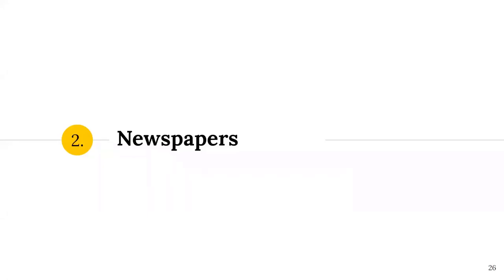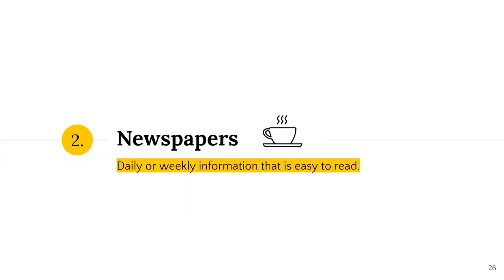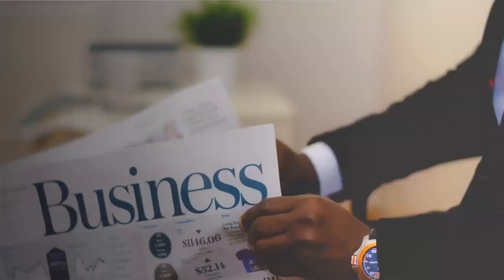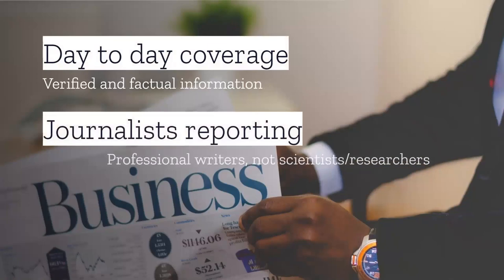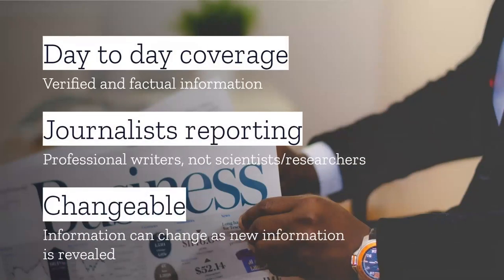Newspapers are a great place to find information on current events. Some of your instructors may even require you to use them for your final research papers. CSUB's library subscribes to a number of different newspapers, both locally and nationally, and in print or e-access. Newspapers provide up-to-date information on current topics, with stories that come out daily, sometimes weekly, and are factual in nature, easy to read, and for everyone. Usually journalists contribute to newspapers, and the articles tend to be more stating of the facts than analysis. Information may change from day to day as new information is released on a story.